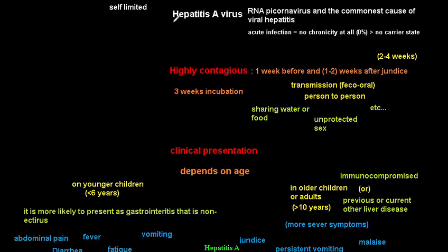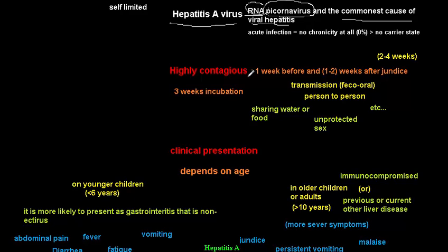This video is to discuss hepatitis A virus. Hepatitis A virus is an RNA picornavirus — the big family is picornaviridae. It is an RNA virus and the commonest cause of viral hepatitis.